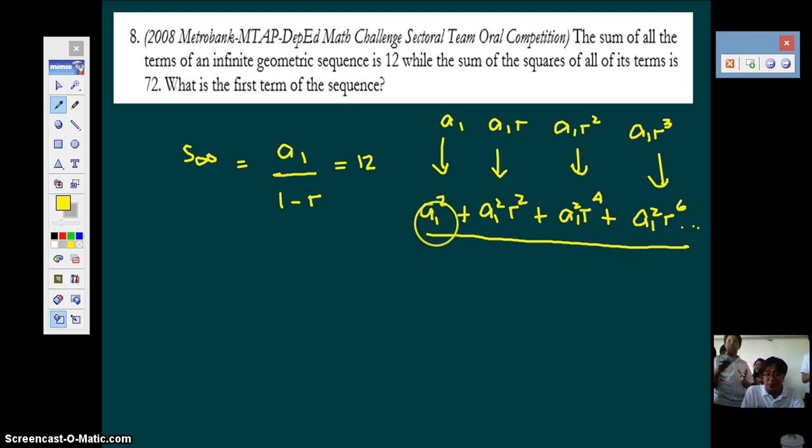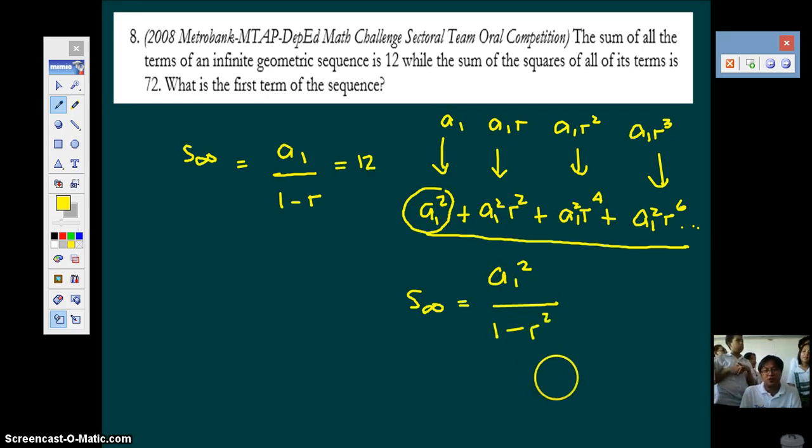Now notice, this is also a geometric progression. What is the first term here? A1 squared. What's the common ratio in this geometric progression? R squared, yes, very good. So therefore, the sum of this particular series is its first term, which is a1 squared, over 1 minus the common ratio in here, which is r squared. And this is equal to 72.